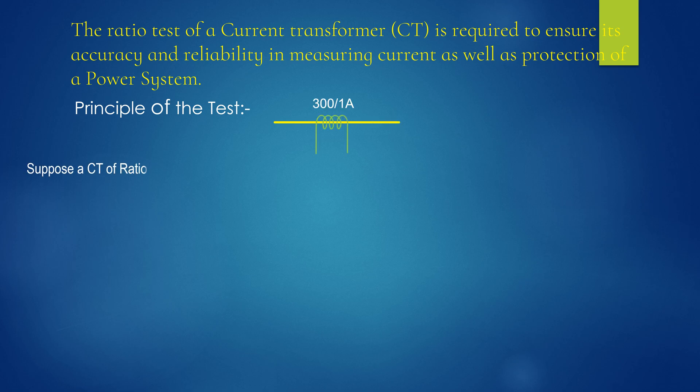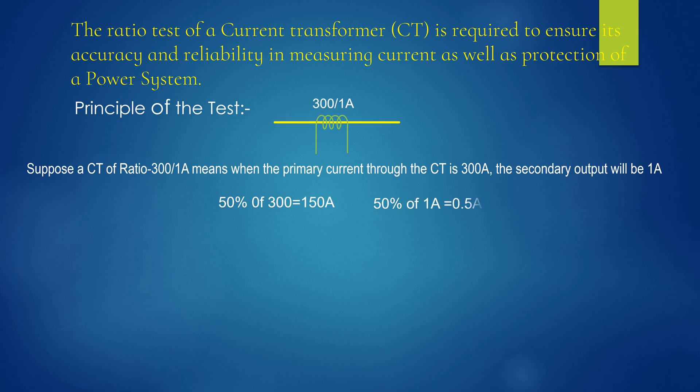Suppose a CT of ratio 300 by 1A means when primary current through the CT is 300A, then secondary output current will be 1A. Now, if the CT primary input current is 150A, that is 50% of the rated input, then secondary output should be 0.5A. Therefore, ratio in both cases is same, 300 by 1A. Ratio check test indicates whether the CT will work at proper ratio or near its accuracy, which is a very important factor.